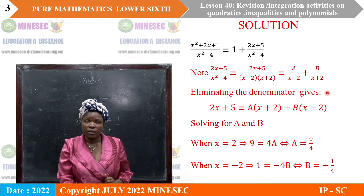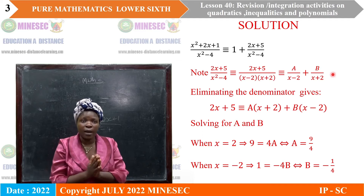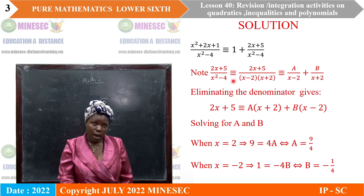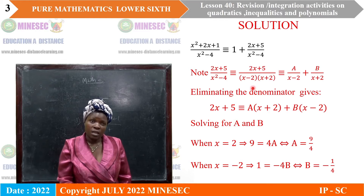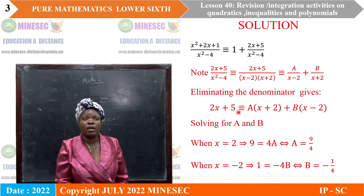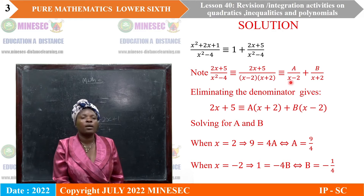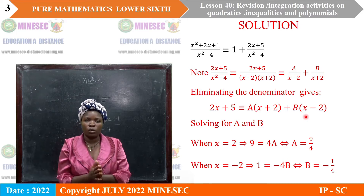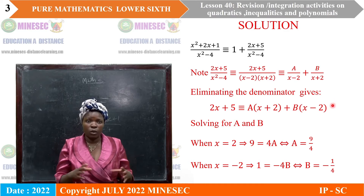Eliminating the denominator: we multiply all through the identity by the LCM, the least common multiple, which is x squared minus 4. We are left with 2x plus 5 on the left. Multiplying the right-hand terms gives a times x plus 2, plus b times x minus 2. At this level we solve for the constants a and b which we introduced, so that we can put them back and complete the decomposition into partial fractions.